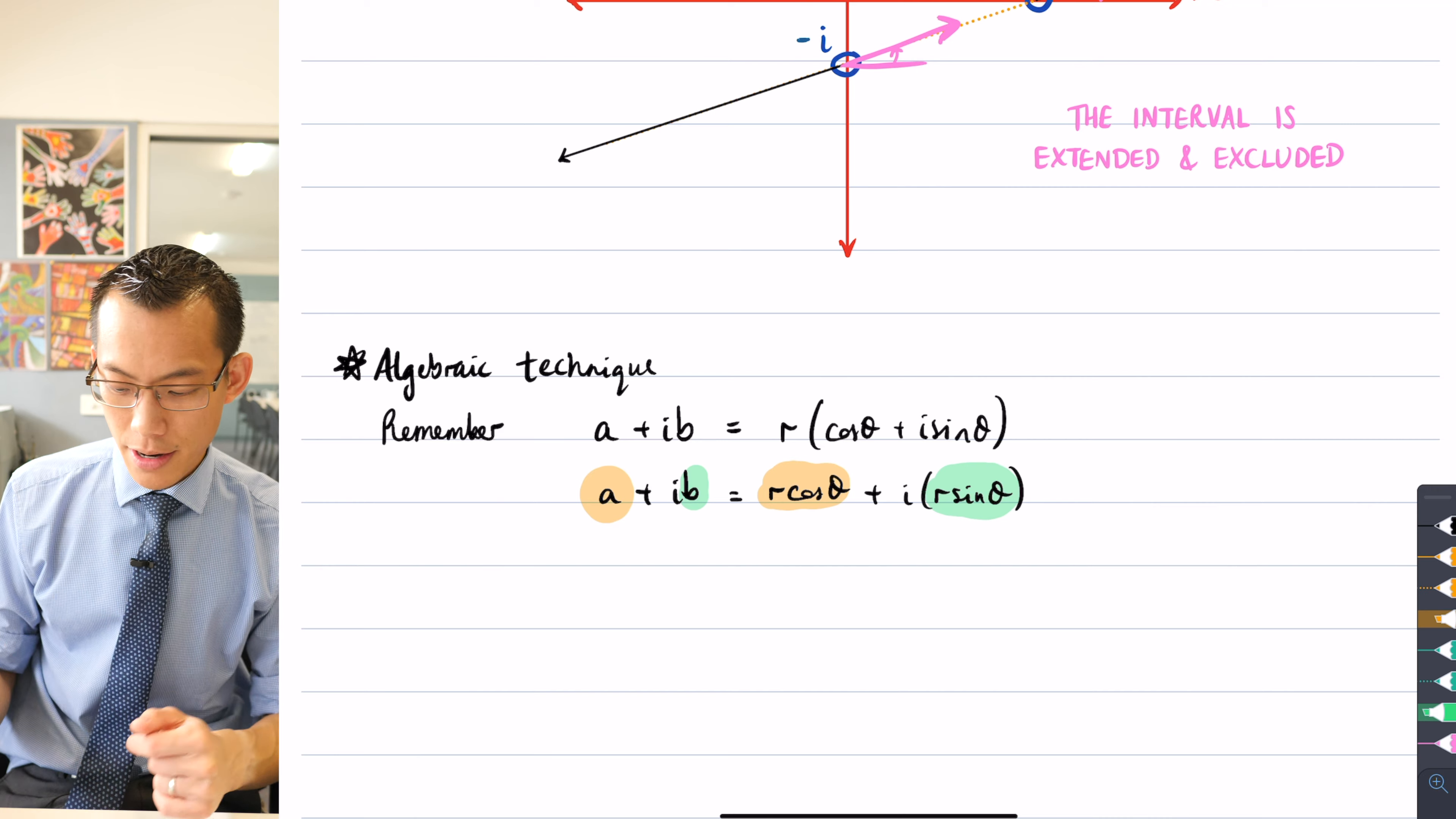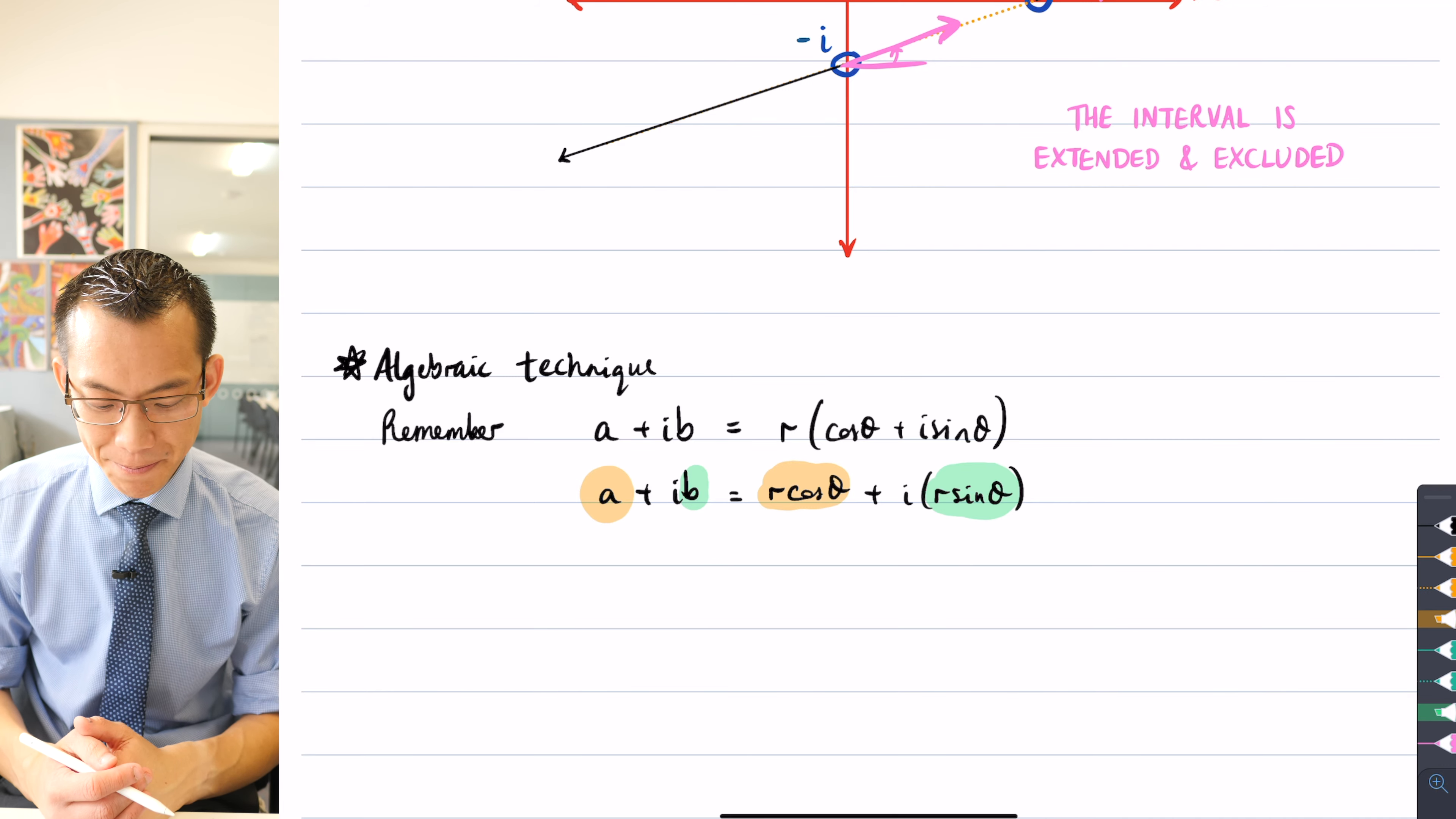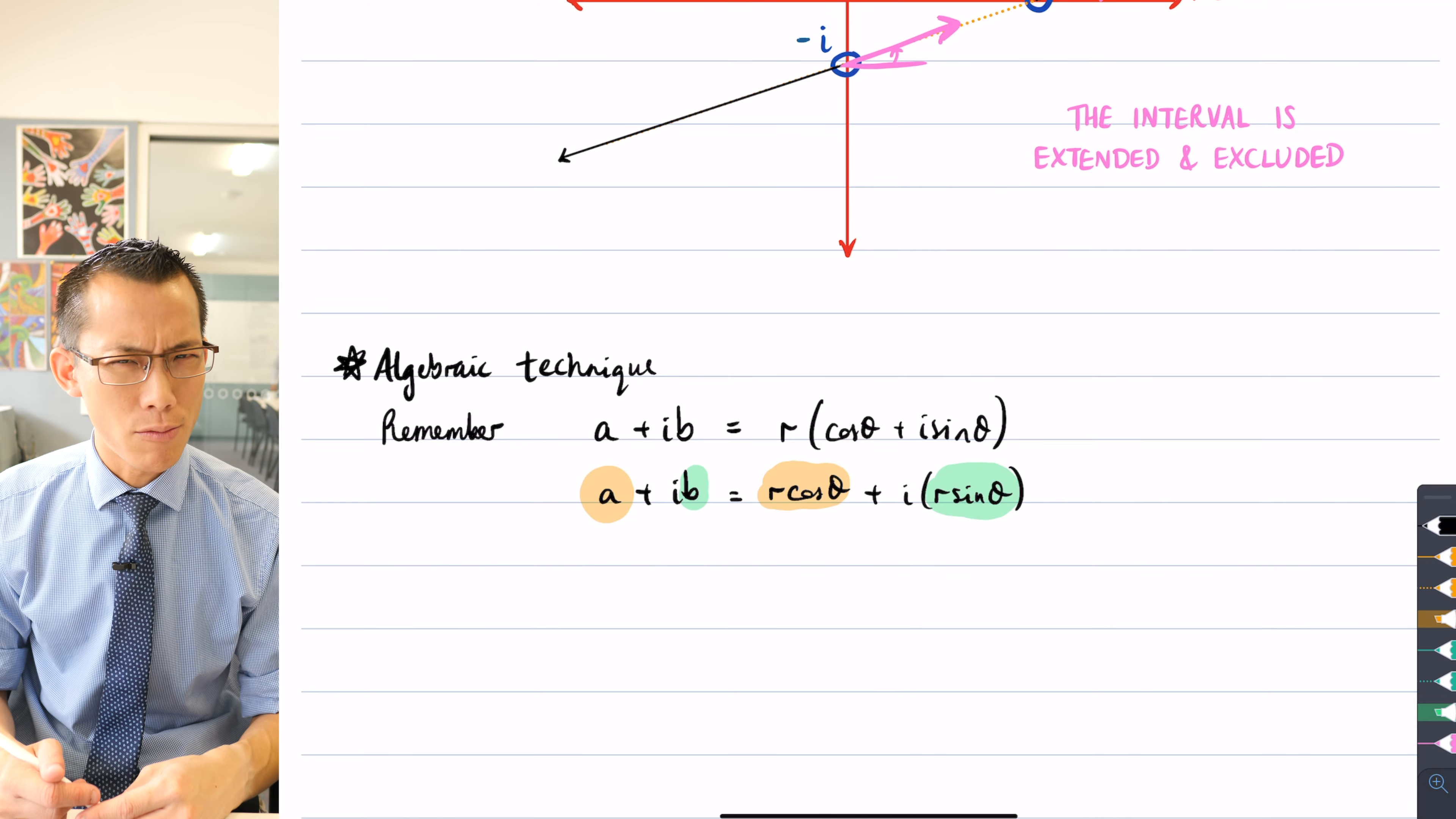I can make the comparison between them and say well these two must be equal because there's no other part in the equation for the imaginary components to come from, and same with these parts, these must be equal. Now rather than go and just say you know A equals this, B equals this, I'm going to go one step further and you'll see why in a second. I'm actually going to do a bit of a division here.